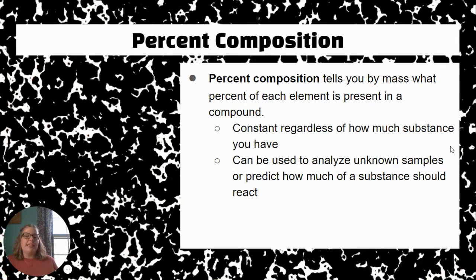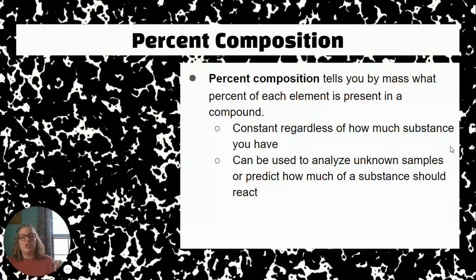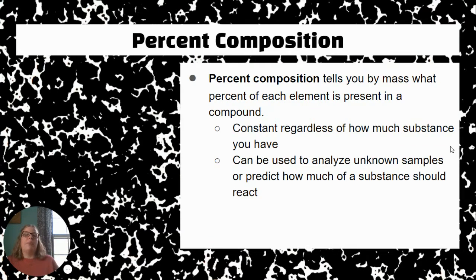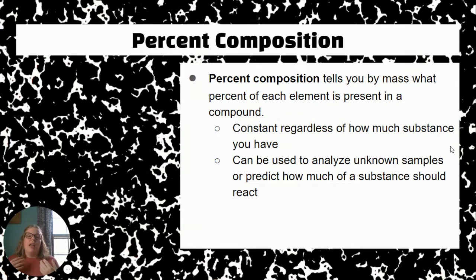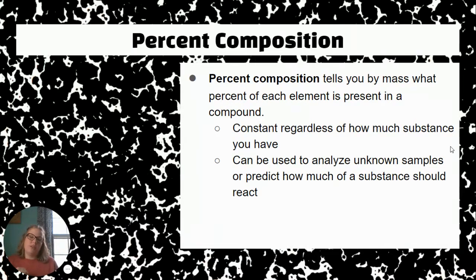Okay, so percent composition, what it is, is it's something that tells you what percentage each element makes up in a substance by its mass. So what I mean by that is if I'm looking at, let's say, one of our compounds from previous slide, H2O, I can figure out what percentage the hydrogen makes up by mass or the percentage the oxygen makes up by mass. Or in the case of a hydrated salt, I could calculate the percentage that the water makes up in that compound. You can kind of do all of that.